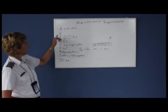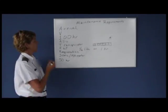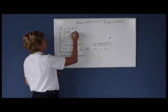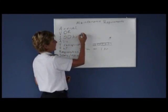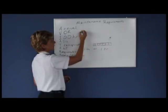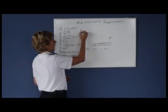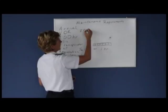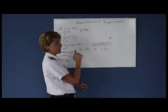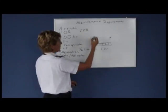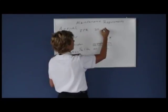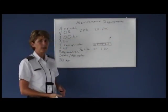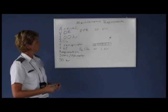The only one we skipped was the V, which stands for VOR checks. A VOR check is done only if you intend to fly the airplane under IFR conditions or on an IFR flight plan — meaning instrument flight rules — and it's done every 30 days by the pilot. The documentation is kept in the airplane.